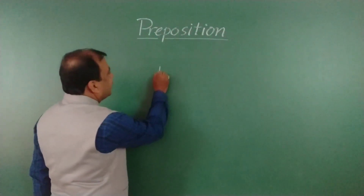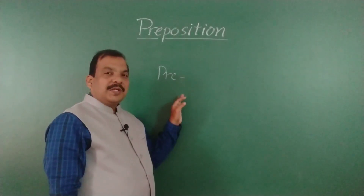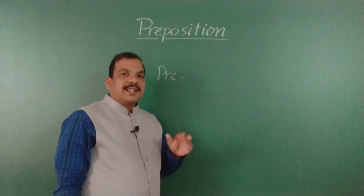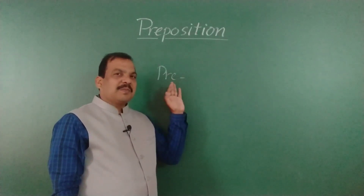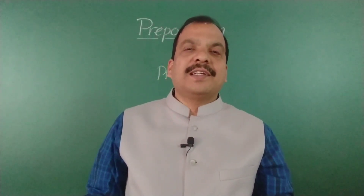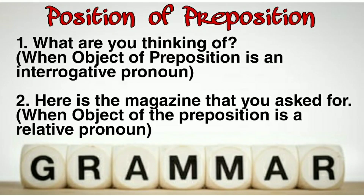Next, let's go to the position of preposition. The prefix 'pre' means 'before,' so usually we use prepositions before a noun or pronoun — that's why it is called a preposition. But my dear friends, this is not always the case. Sometimes prepositions are used at the end of a sentence, and sometimes also at the beginning. Please go through these sentences carefully. When the object of the preposition is an interrogative pronoun —